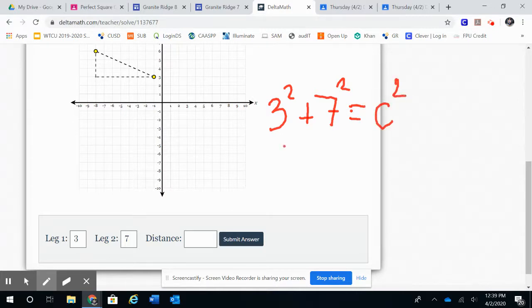I know that three times three is nine, plus seven squared, which is forty-nine, equals c squared. Then I can go ahead and add those together, so forty-nine plus nine gives me fifty-eight equals c squared.